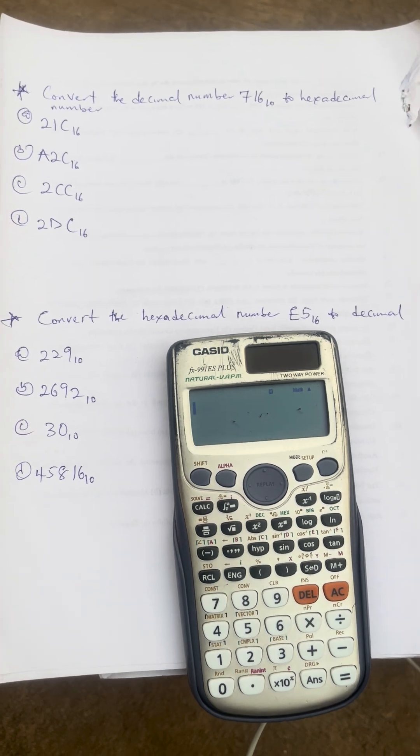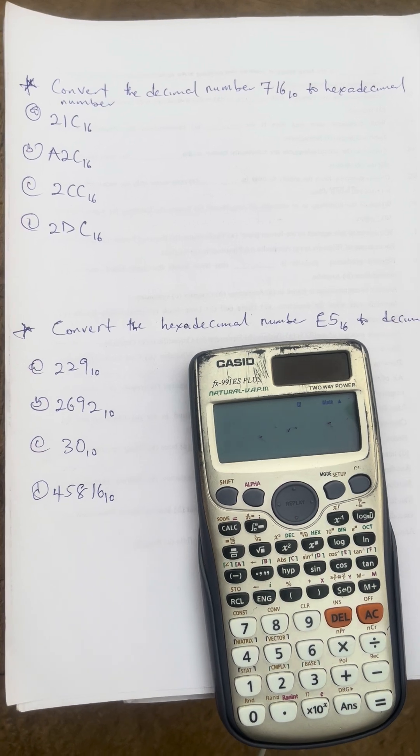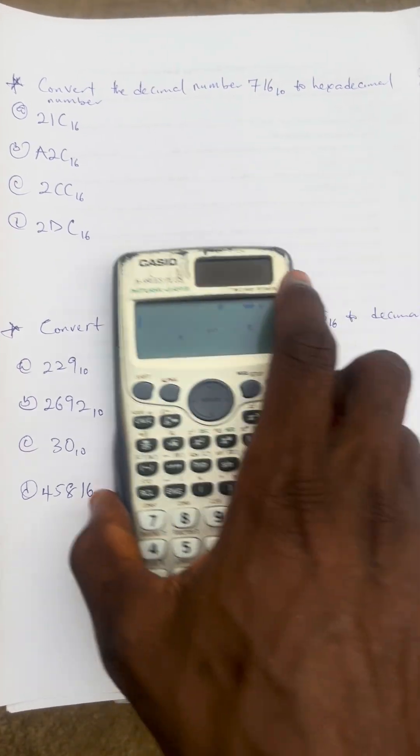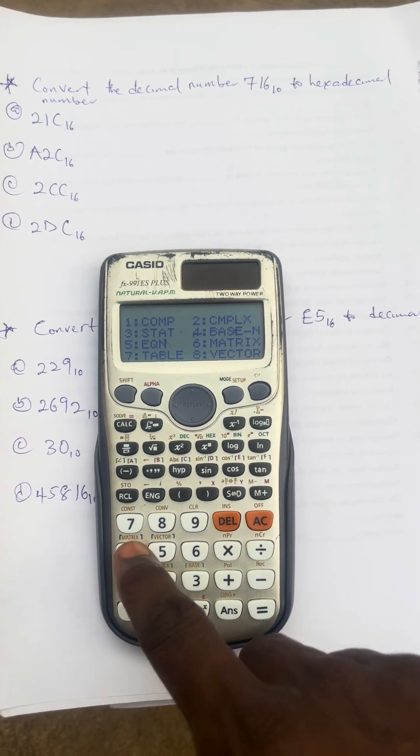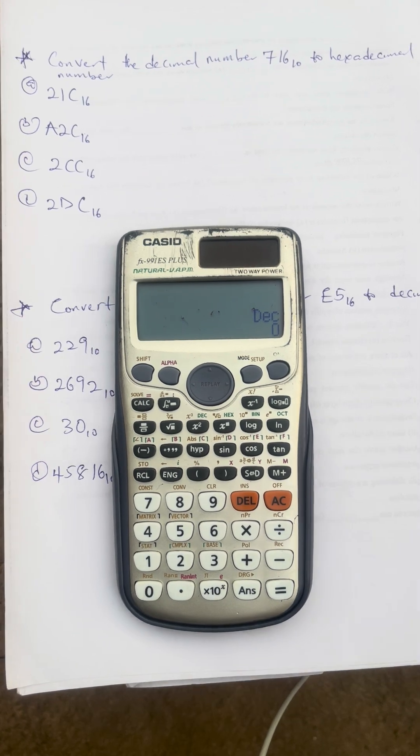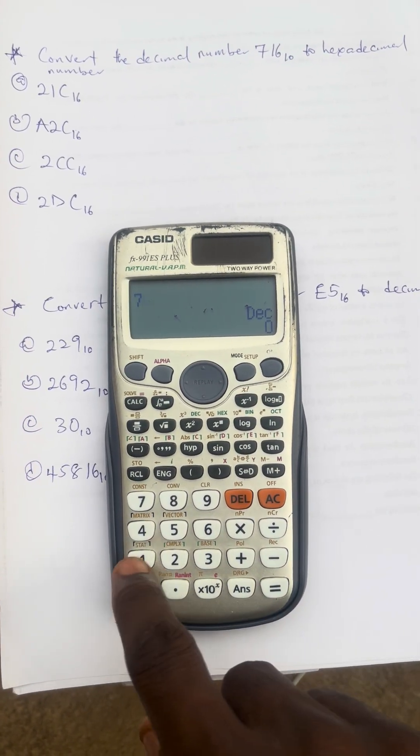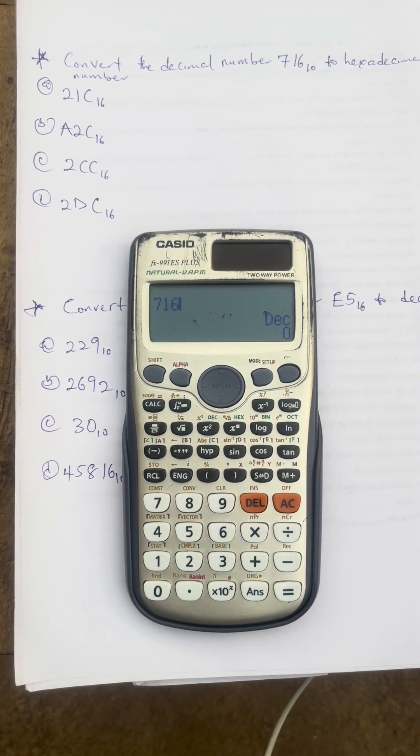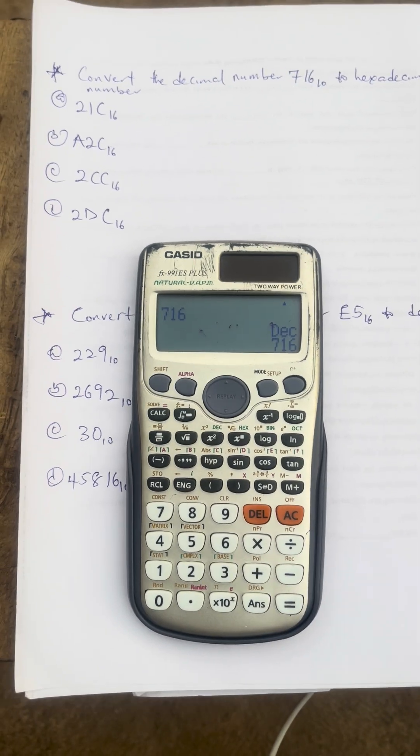Now the first question says we should convert the decimal number here to hexadecimal. What you are going to do is press your mode, your base number is four. Don't forget it is decimal that we are asked to convert and our calculator is already in decimal. So press that decimal which is 716.